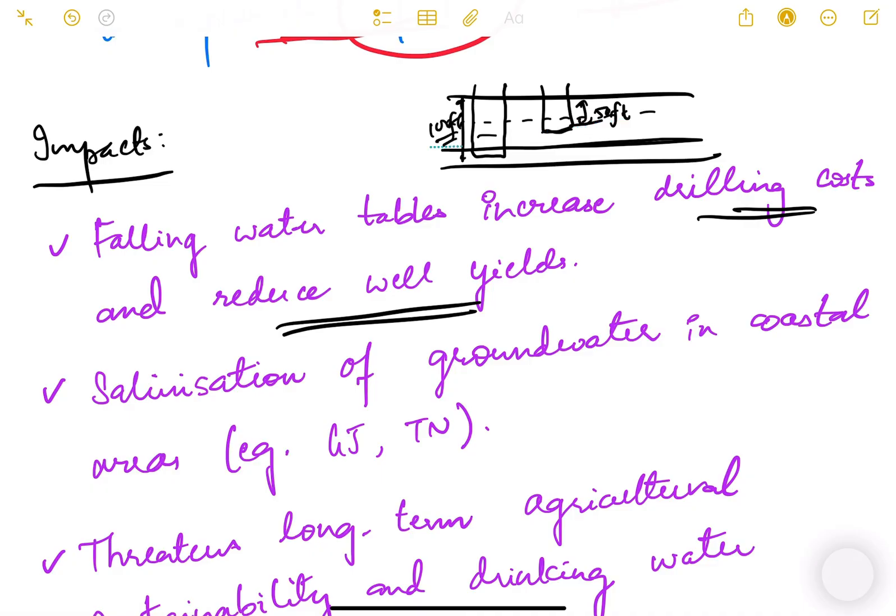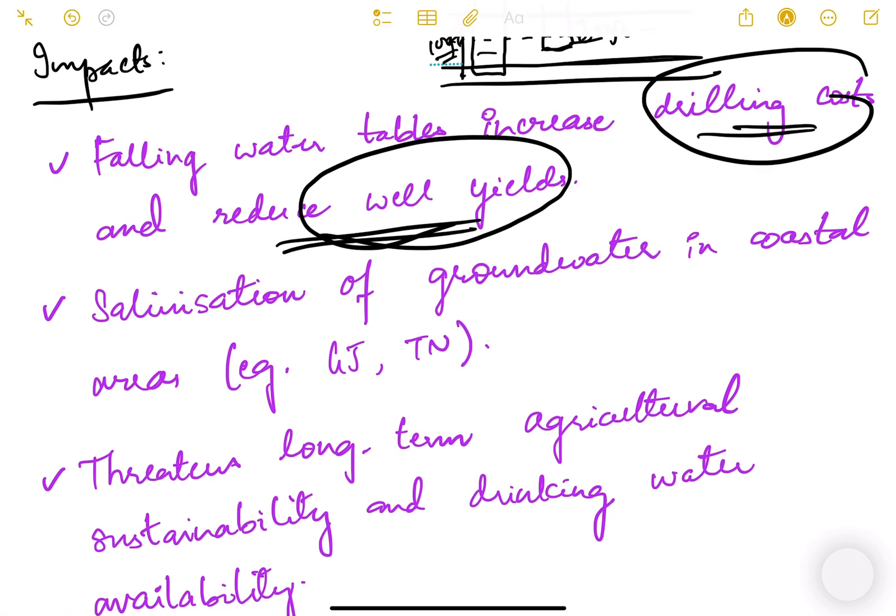Obviously the cost will increase. Falling water tables increase drilling costs and reduce well yields—the amount of water that is coming out of that well.